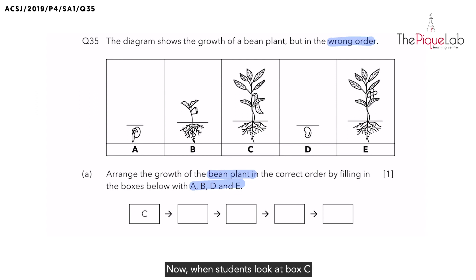Now when students look at box C and they look at the diagram, they notice that for C, it is actually a plant in its adult stage. How do we know that it is a plant in the adult stage? Because we can see that there are fruits present.